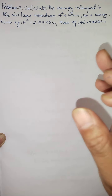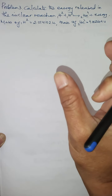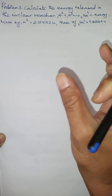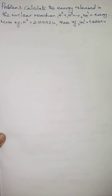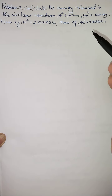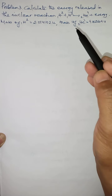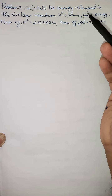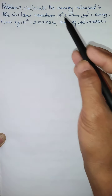In a nuclear reaction, there is always a loss in mass — called mass defect. Whenever the reactants, the nuclei or elements, react with each other, a new element is formed called the product. When the product is formed from the reactants, energy is always released, and this energy corresponds to the loss in mass, which we call mass defect.